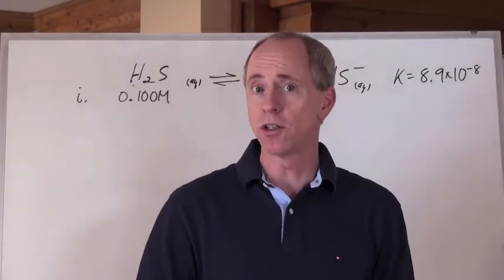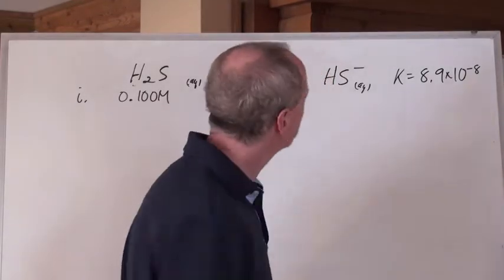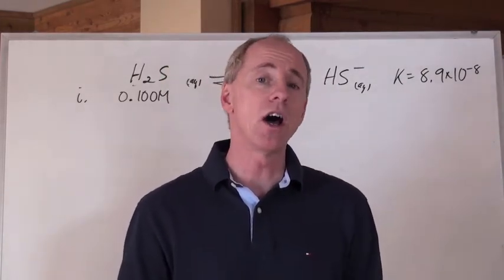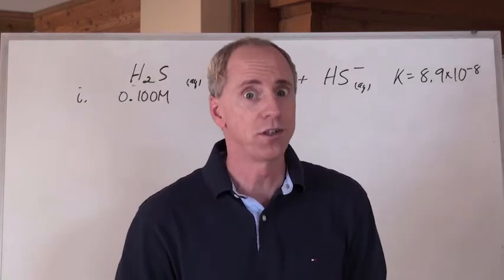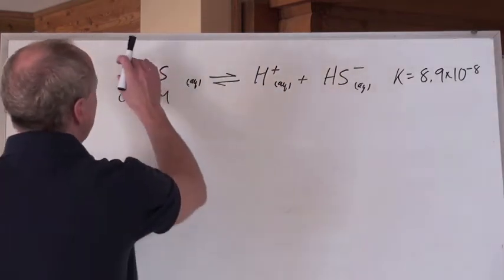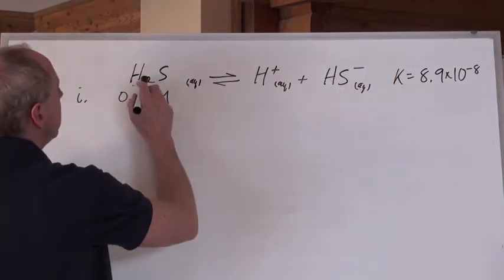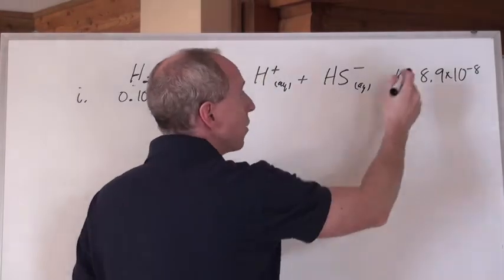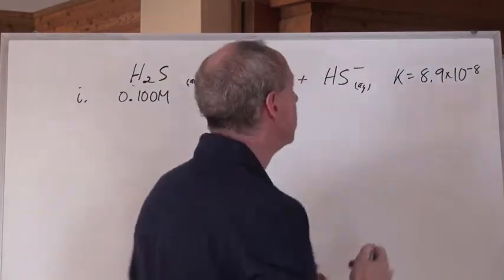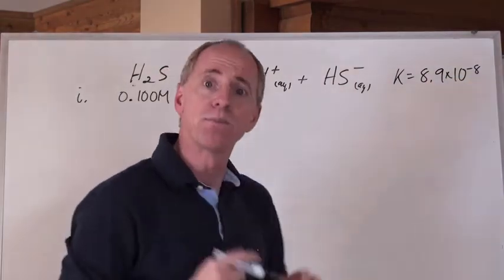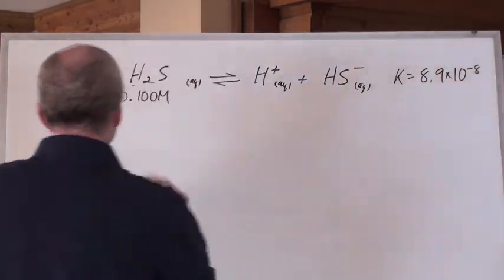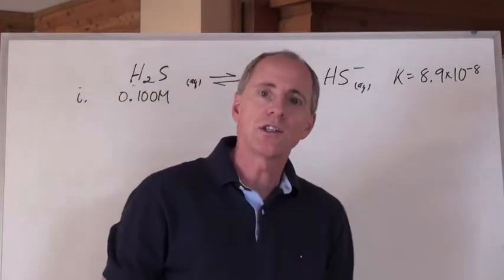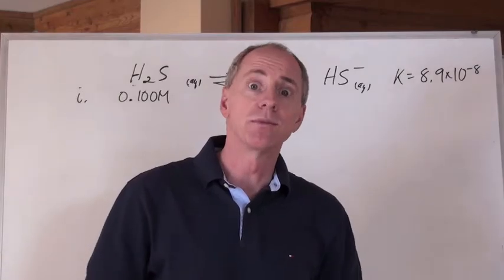Here's another equilibrium concentration question. This one has a little twist to it. We have a system in equilibrium - the dissociation of hydrosulfuric acid (H2S) into its ions in solution, where the K value, or Ka value, equals 8.9 times 10 to the negative 8. We're given an initial concentration of 0.100M H2S and none of the other chemicals. The question is: calculate all the equilibrium concentrations. So let's go.